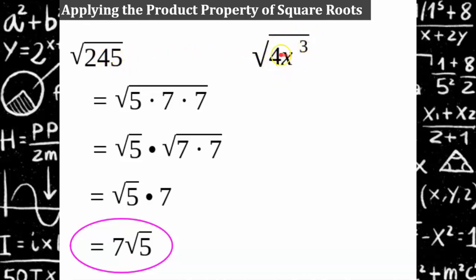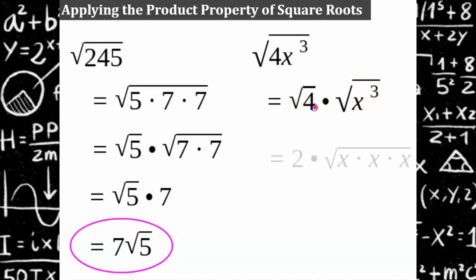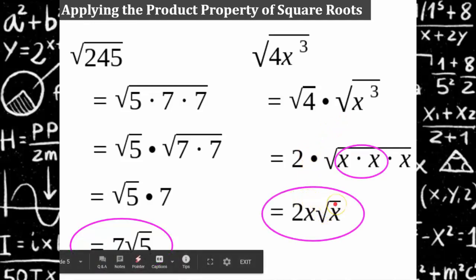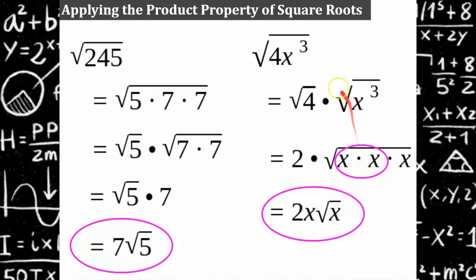Let's try the algebraic expression with radicand 4x cubed. Using the product property, we separate it into the square root of 4 times the square root of x cubed. The square root of 4 is 2. Then x cubed is x times x times x; two of those factors form x squared, and the square root of x squared is x, which comes out of the radical. This gives 2x times the square root of x, which is in simplest form.